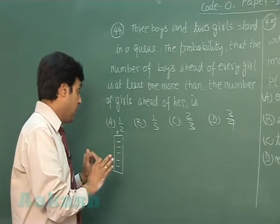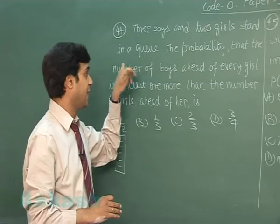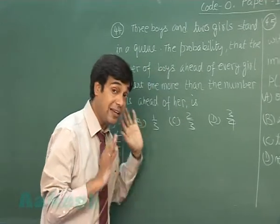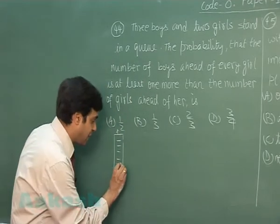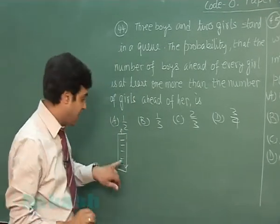So the question says the probability that the number of boys ahead of every girl is at least one more than the number of girls ahead of her. So it should be started from the last term. Let's say one girl is sitting here.